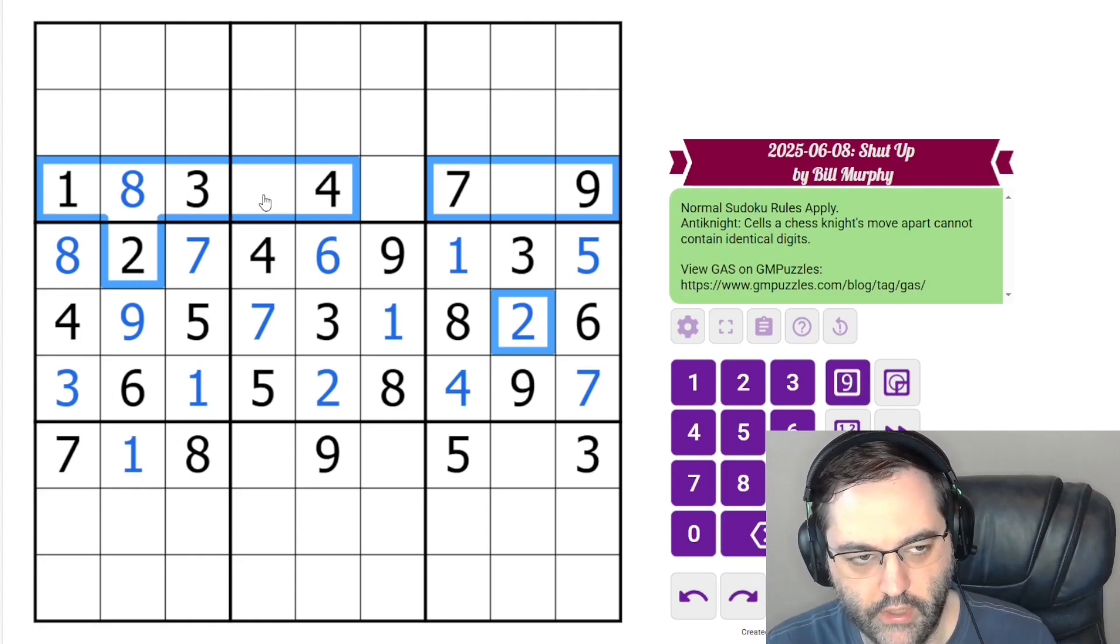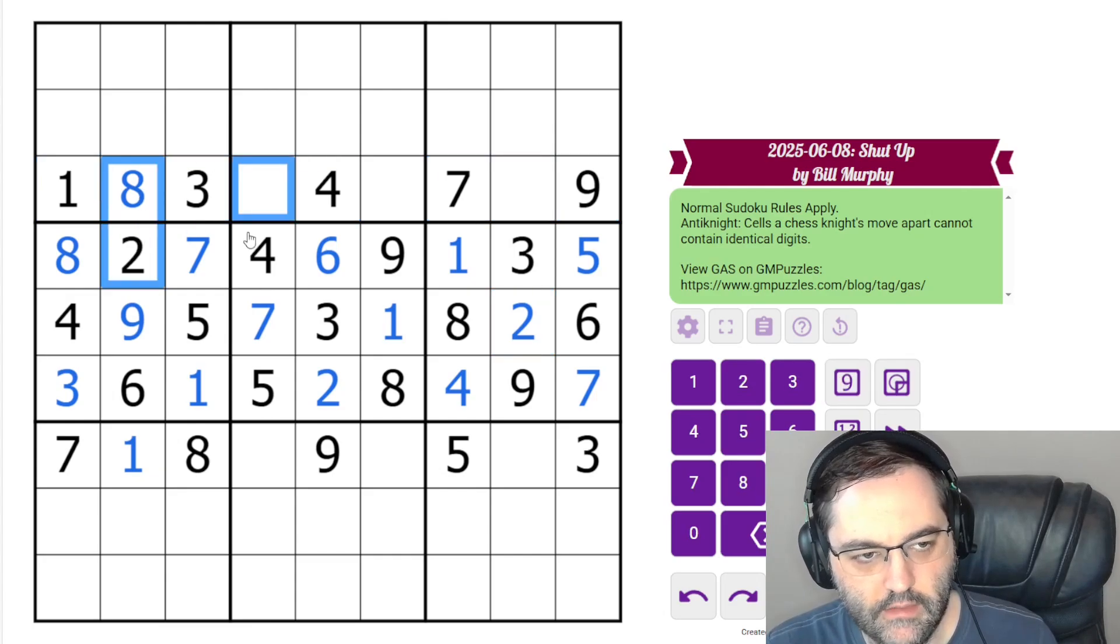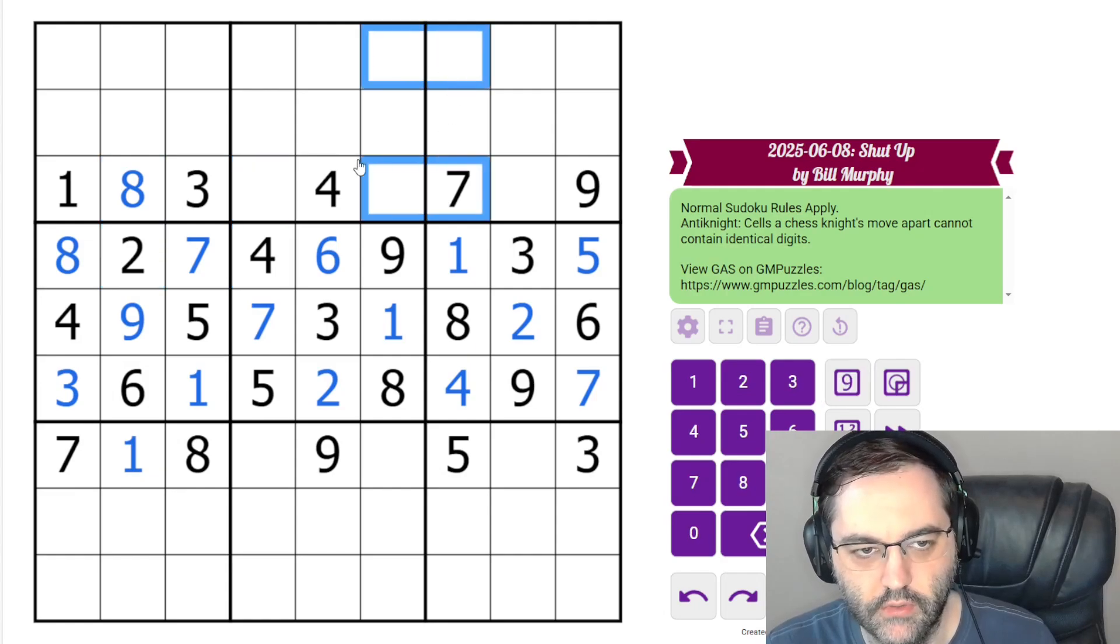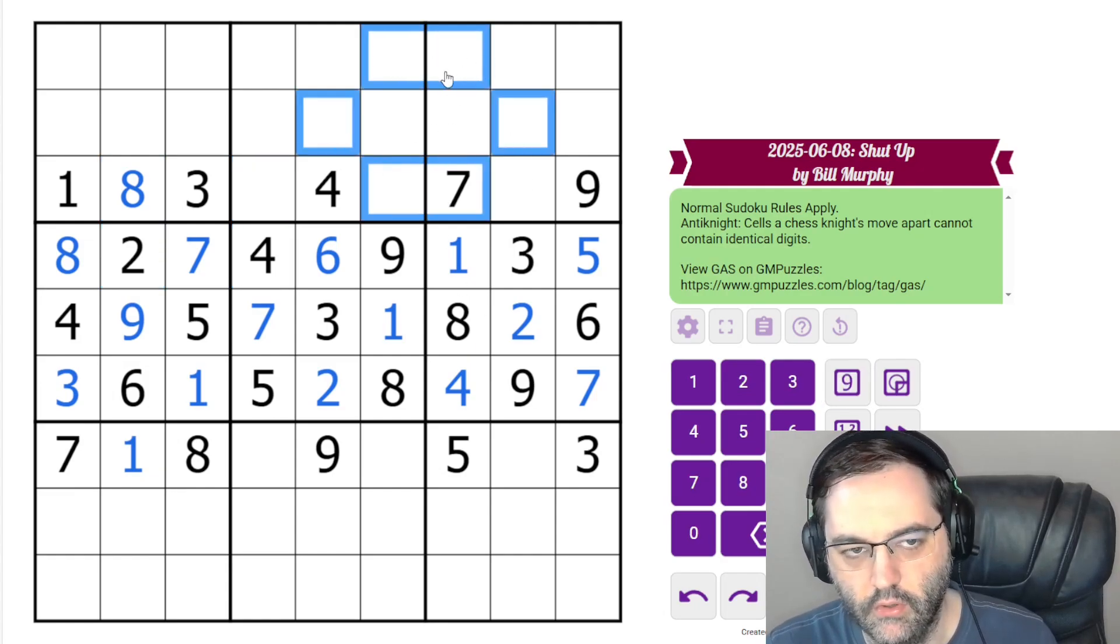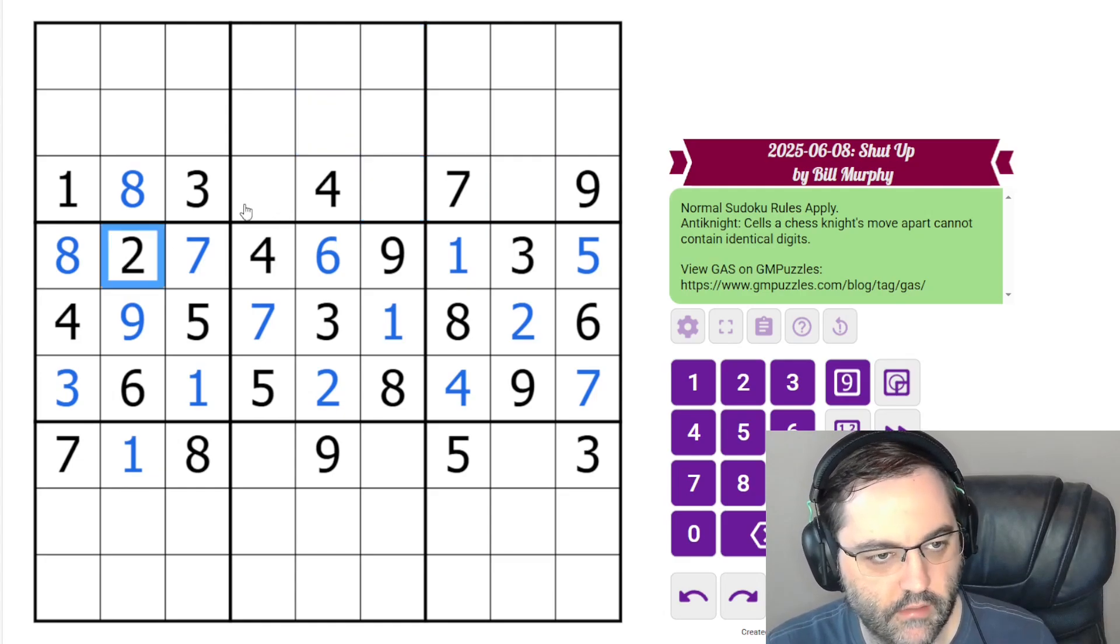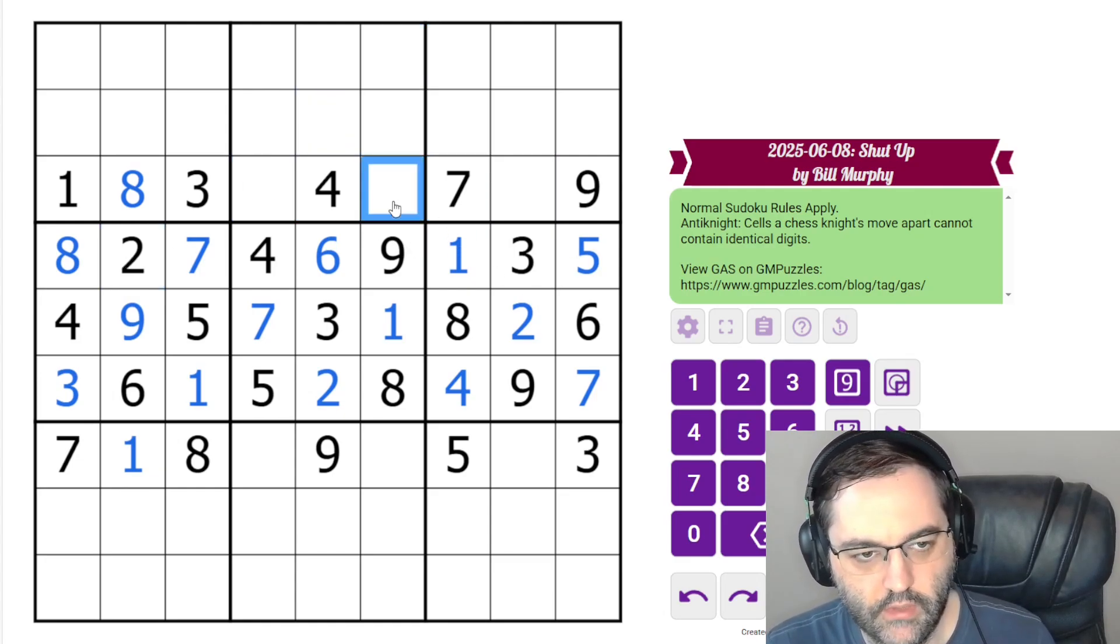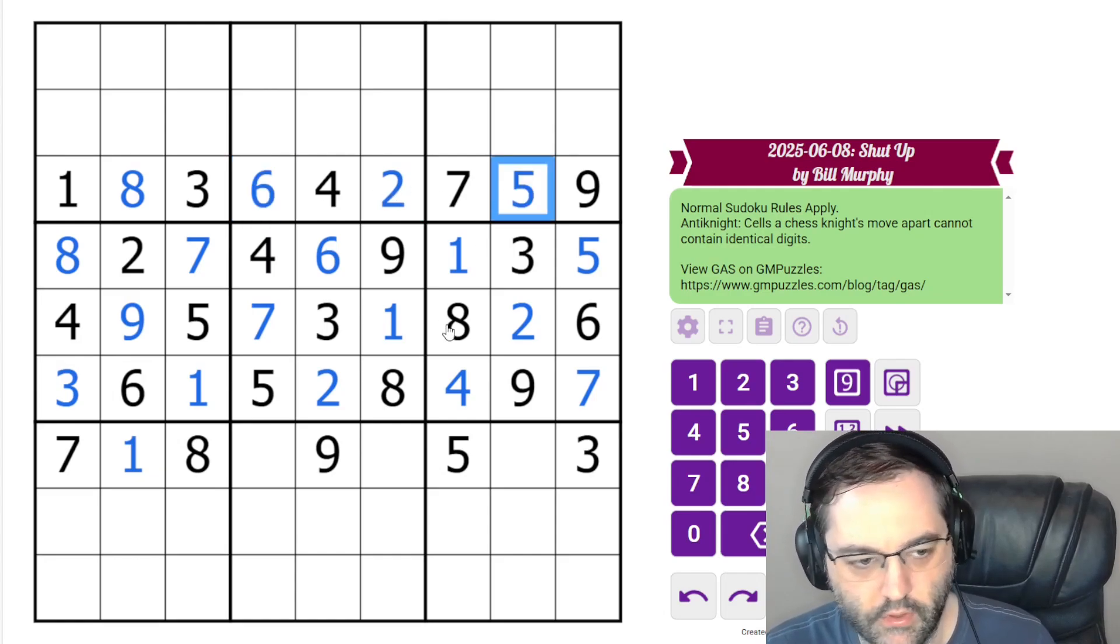These twos. Sometimes when you have alternating cells that have givens or are already filled in, in an anti-knight puzzle, you can look for this pattern. Two's ruled out here and here. But this two, because it's next to this cell, if we skip over the next empty cell, it's a knight's move away from that cell. The two is ruled out.